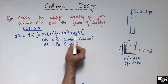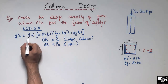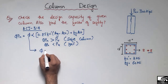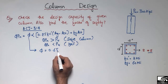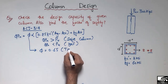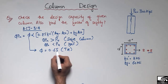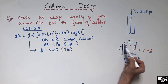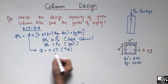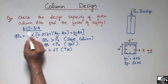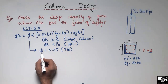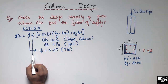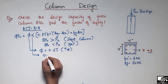In this formula, φ is 0.65 for a tied column. You can see ties are used in this column. If a spiral or circular ring is used, a different value of φ is taken according to the code. For a tied column we use φ = 0.65. Alpha (α) is the strength reduction factor and we take it as 0.80.